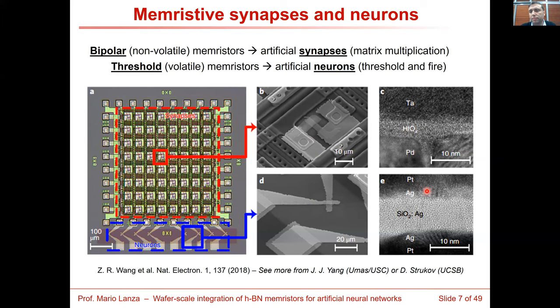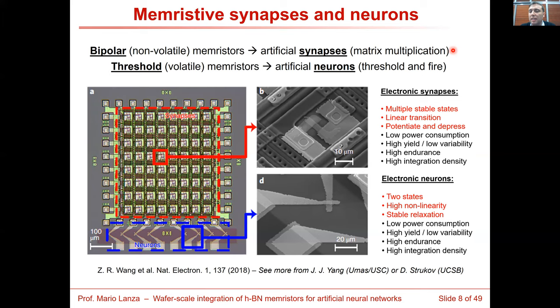To fit the requirements of synapses and neurons, we still need research at the material level. Synapses need multiple stable states, linear transition between them, and the ability to potentiate and depress — increasing and decreasing conductivity. Neurons need highly non-linear bipolar switching between two states with stable relaxation. Both need low power consumption, high yield, low variability, high endurance, and high integration density. There is still a lot of work to do despite some important prototypes already demonstrated.